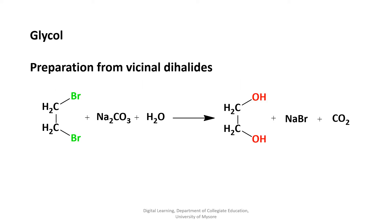Dihydric alcohols contain two hydroxyl groups in the molecule. The simplest and most important dihydric alcohol is ethylene glycol. In vicinol dihalide, the same halogen atom is attached with the adjacent carbon atom of the same compound. For example, in the hydrolysis of 1,2-dibromoethane with aqueous sodium carbonate, it produces glycol.